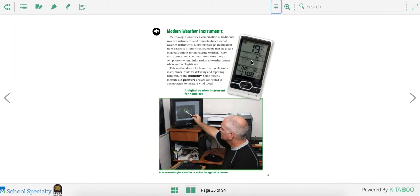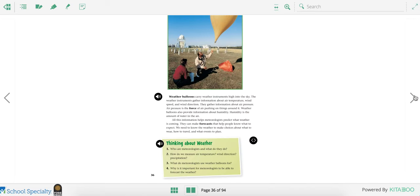Some models measure air pressure and are connected to anemometers to measure wind speed. So we don't usually have these at our house, but now you can look all of this information up on your phone or computer.